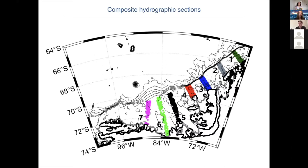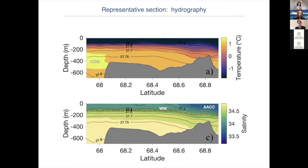The other thing you can do with this map is calculate the dynamic height, which is the integral of the density field and gives you a horizontal velocity with respect to some reference. This dynamic height field is highest all along the coast and drops off quite rapidly as you move away. It's that strong gradient that's indicative of the strong coastal boundary current.